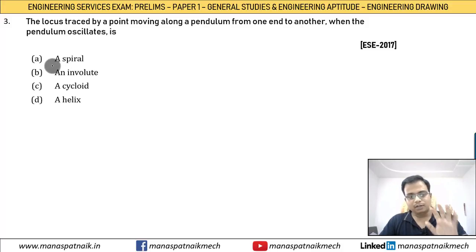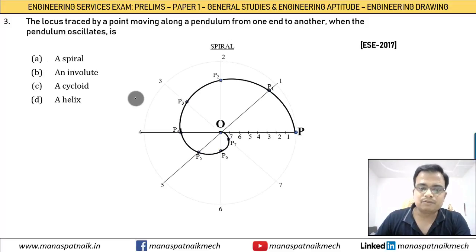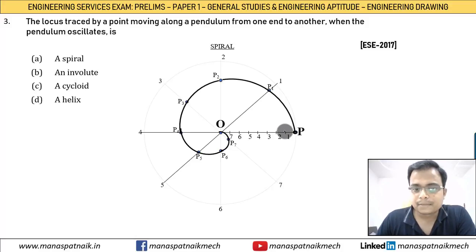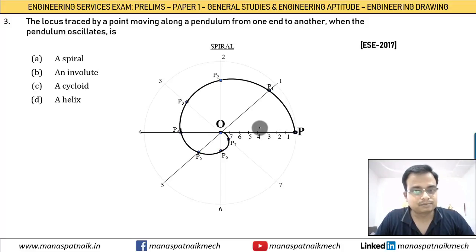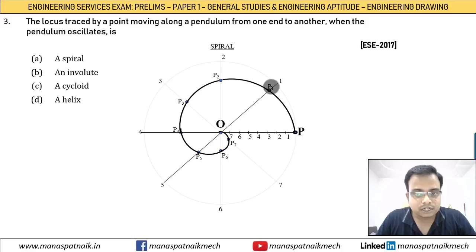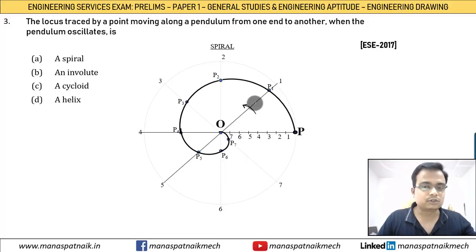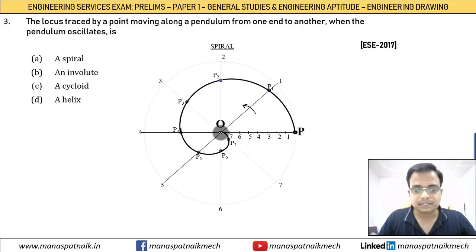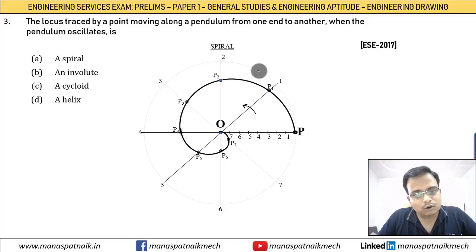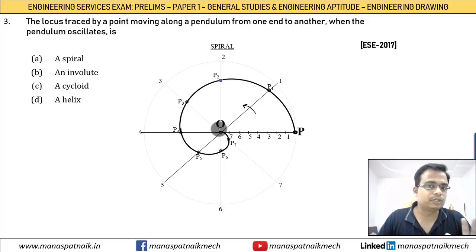Let me explain why spiral is correct. We have a link OP with a point P having linear movement along the link. As the link rotates anticlockwise, point P comes closer to the origin — closer and closer with each rotation. When you join all these points, the special curve you get is what we call a spiral. So that's the right option.